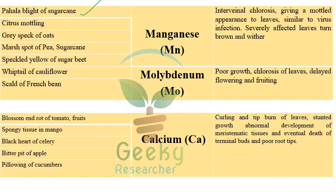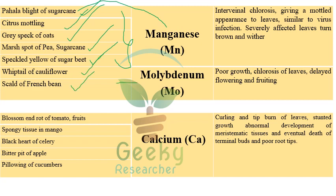Manganese deficiency causes pahala blight of sugarcane (very important), citrus mottling, gray speck of oats, marsh spot of pea and sugarcane, and speckled yellows of sugar beet. Molybdenum deficiency causes whiptail of cauliflower and scald of French bean - whiptail of cauliflower is very important.